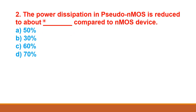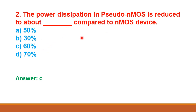Next question: the power dissipation in pseudo NMOS is reduced to about dash compared to NMOS device. The power dissipation in pseudo NMOS is about 60% reduced compared to NMOS device. So option C is the right answer.